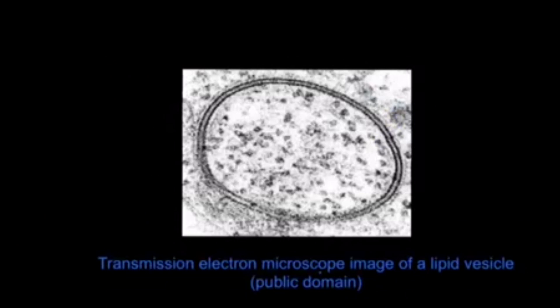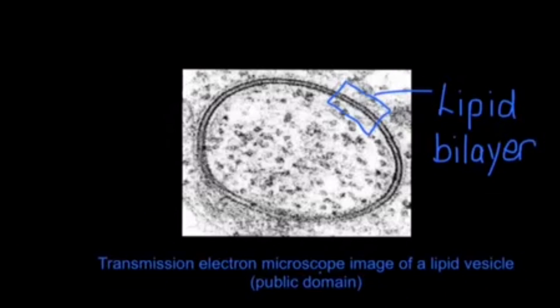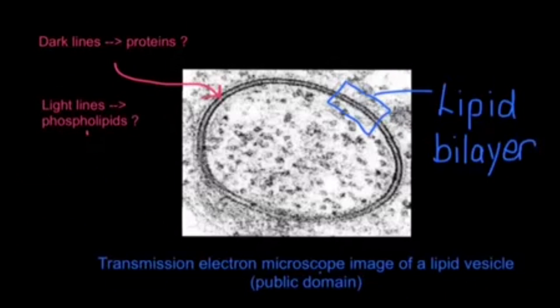When Davison and Daniele looked at membranes on electron micrographs, they noticed two parallel dark lines with a lighter region in between. On electron micrographs, proteins generally appear dark, while phospholipids appear lighter. So this observation suggested that there may be protein layers either side of a phospholipid bilayer.